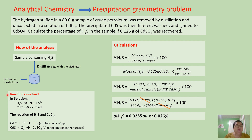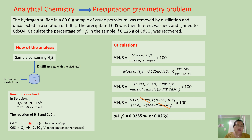Also, the cadmium chloride, since our solution is an aqueous solution, ionizes to cadmium ion and chloride ion. What happens during the reaction is that the cadmium ion reacts with the sulfide ion, forming a cadmium sulfide precipitate — a black precipitate that settles down in the reaction vessel. That black precipitate is the precipitate of cadmium sulfide.